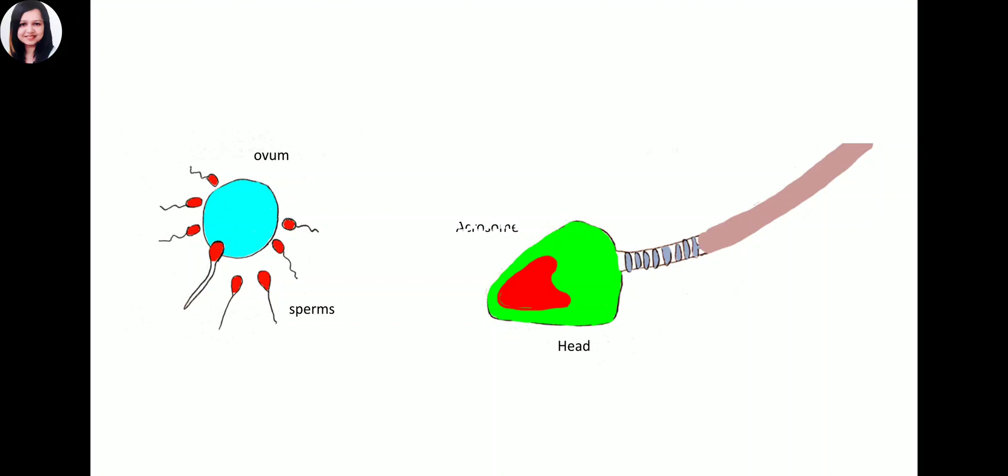The parts of the sperm are: the head, the acrosome containing lytic enzymes, the middle piece, and the tail.